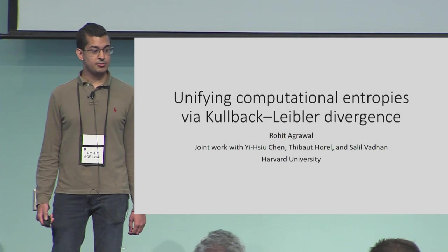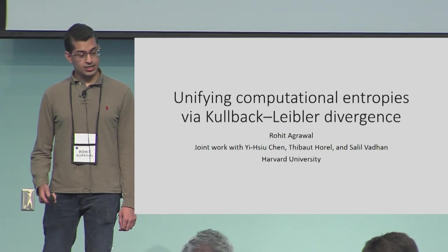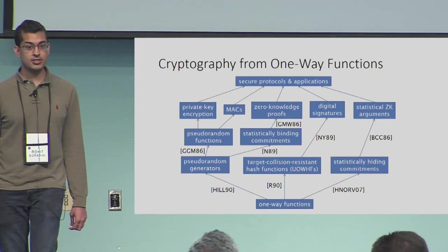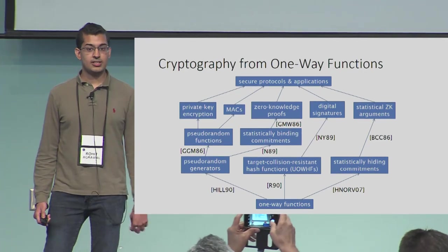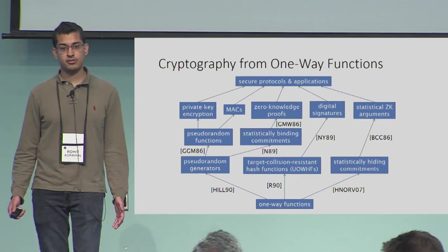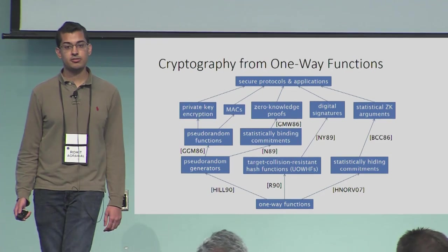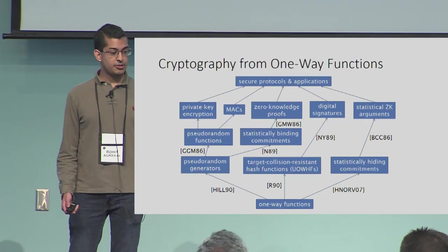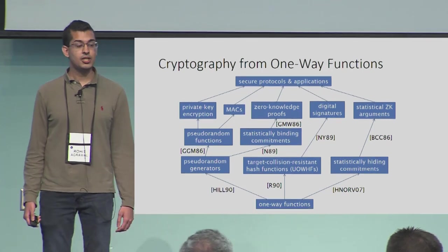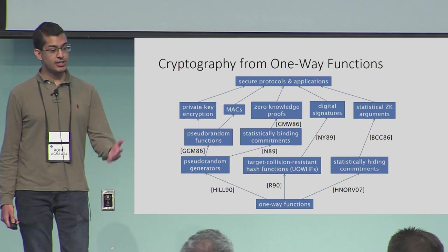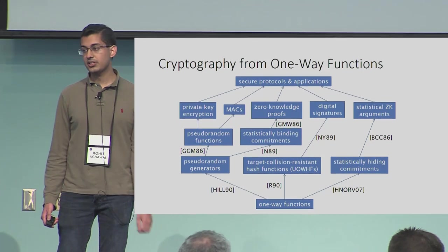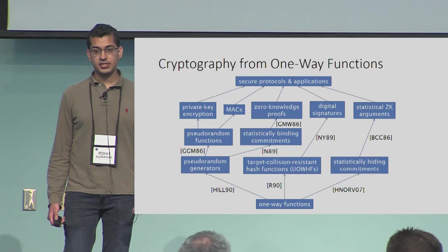Thanks, Ron, and thanks everyone for coming. The context of this talk is the landscape of cryptography from one-way functions. Impagliazzo and Luby showed that one-way functions are necessary for essentially all of complexity-based cryptography. And on the other hand, a beautiful series of works have shown that it suffices for a large number of cryptographic protocols and applications, including most of private-key cryptography and also some basic public-key primitives like digital signatures.